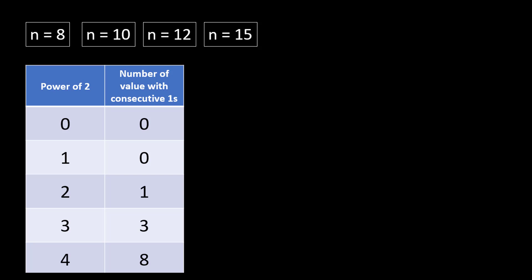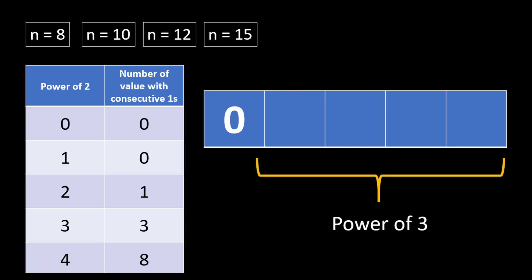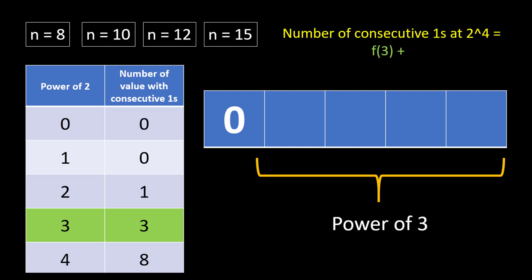Let's take 2 raised to power 4, which is 16, with a 5-bit representation. The primary bit can be either 0 or 1. When the primary bit is 0, we are left with the remaining bits, which gives us the power of 3 range to fill. So the number of consecutive ones at 2^4 starts with f(3), representing the result we already calculated for 2^3.